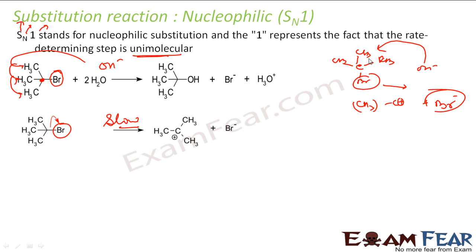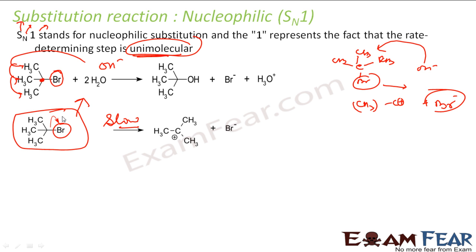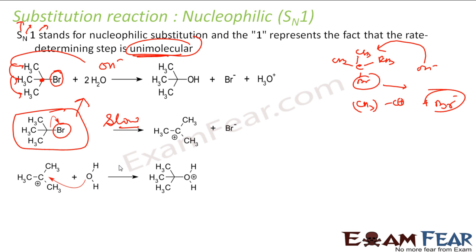The weakest link decides the strength of the chain. Here also, the slower step decides the rate of the reaction. This is very slow, and this determines the rate. It is called SN1 because only one thing determines the rate of reaction. Once you get the carbocation, OH minus can easily attack and this step is very fast.